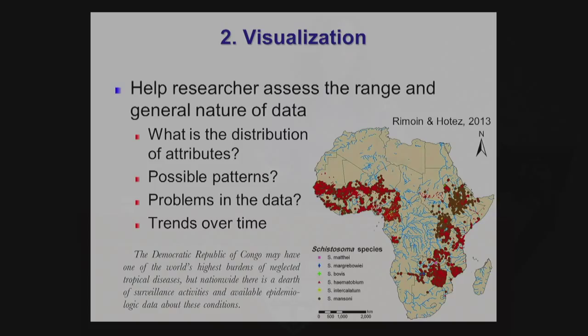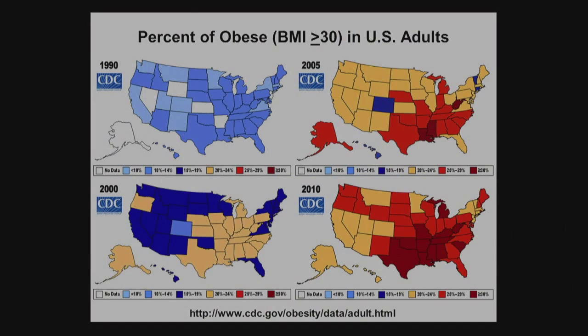Another thing we can do with visualization is see trends over time. One of the best examples is looking at obesity in the U.S. Those maps were produced by the CDC and show a long time series of how obesity changed across U.S. states over time. We start with a map in 1990, when only four colors were needed to describe obesity. Over time, more colors had to be added because obesity became such a huge problem. Comparing the 1990 map with the 2010 map, you can see how things changed in such a short period. A map is worth a thousand words — so you have four thousand words in just one slide.